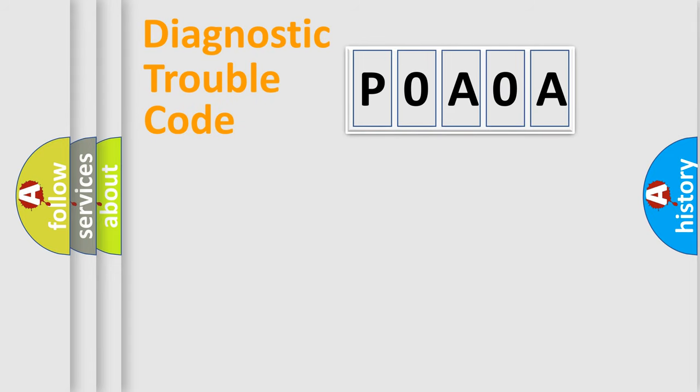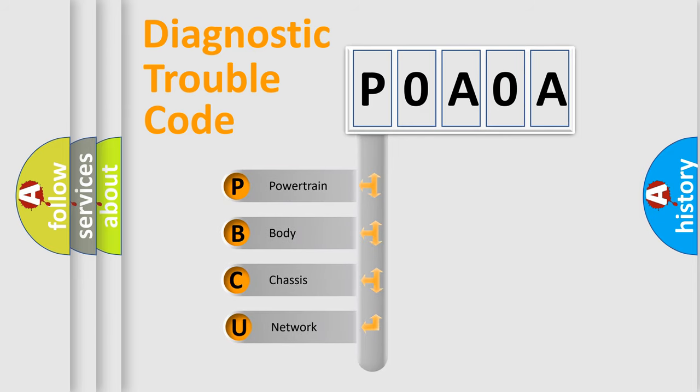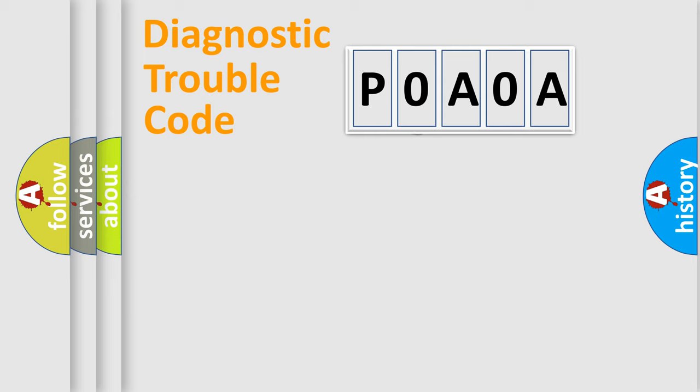First, let's look at the history of diagnostic fault code composition according to the OBD2 protocol, which is unified for all automakers since 2000. We divide the electric system of automobile into four basic units: Powertrain, Body, Chassis, and Network. This distribution is defined in the first character code.